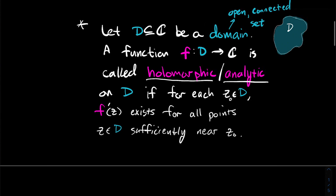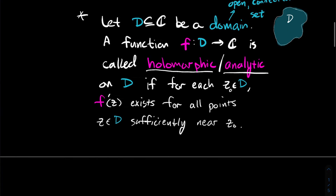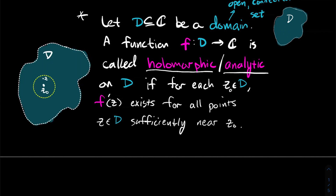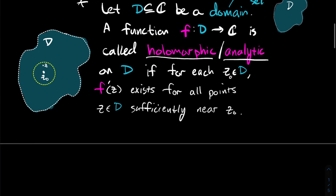F is holomorphic on D if for each point Z₀ in D, the derivative of F exists for all points Z sufficiently near Z₀. I'm not just saying the derivative exists at Z₀ — it's got to hold when you're close to Z₀ too. In a picture: if you've got Z₀ in D, you should be able to find some little disk centered at Z₀ that fits entirely inside D such that for all points Z within that disk, the derivative is defined at all such points.